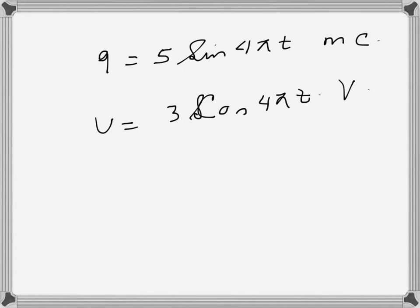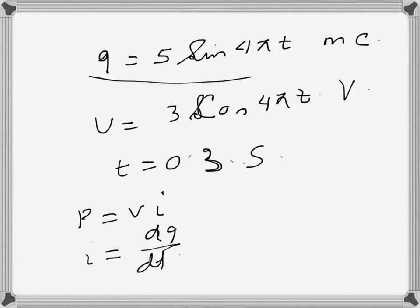What is the power delivered at time 0.3 seconds? We know power is vi, and i can be found by dq over dt, so we differentiate this one with respect to time.